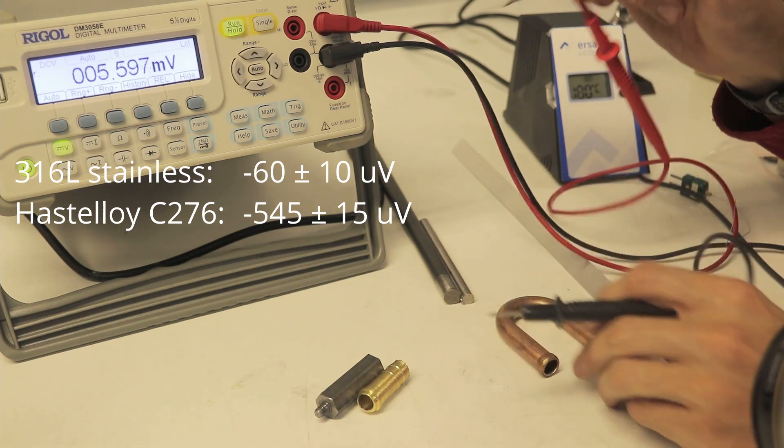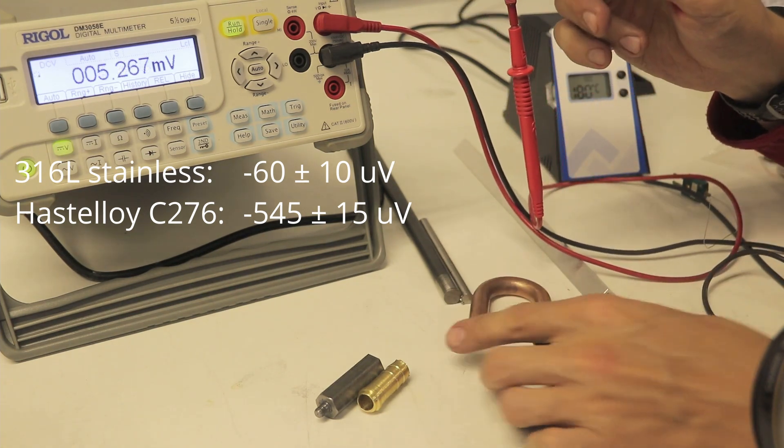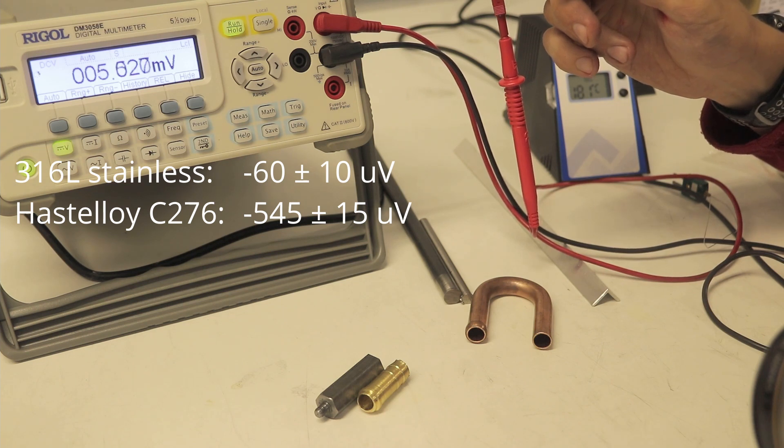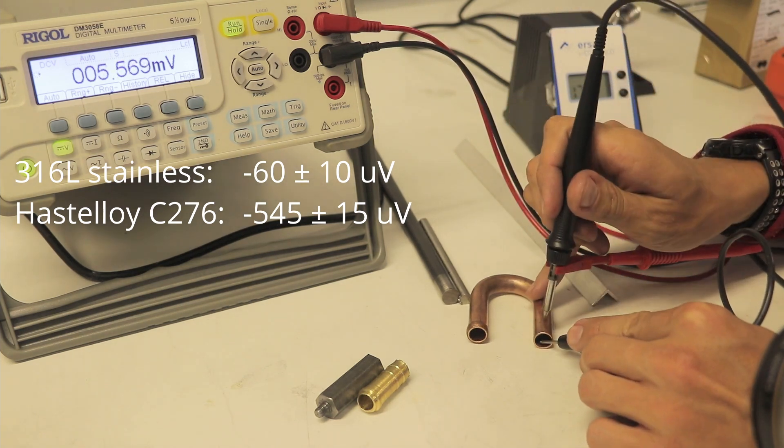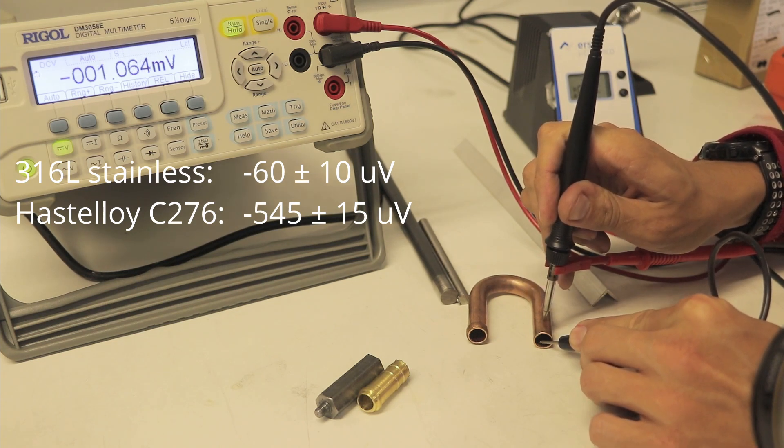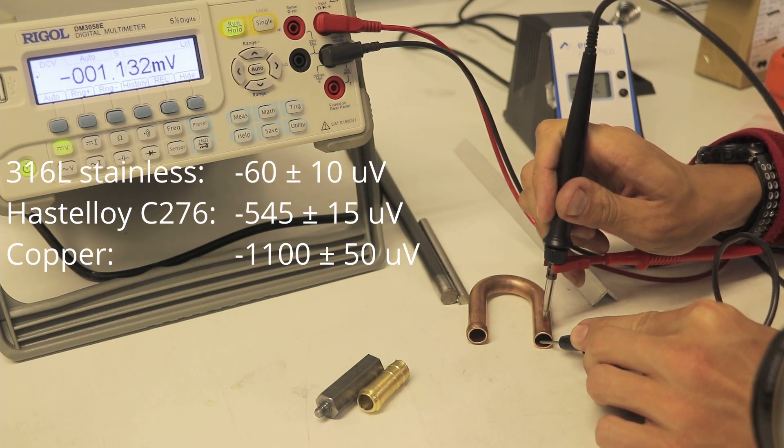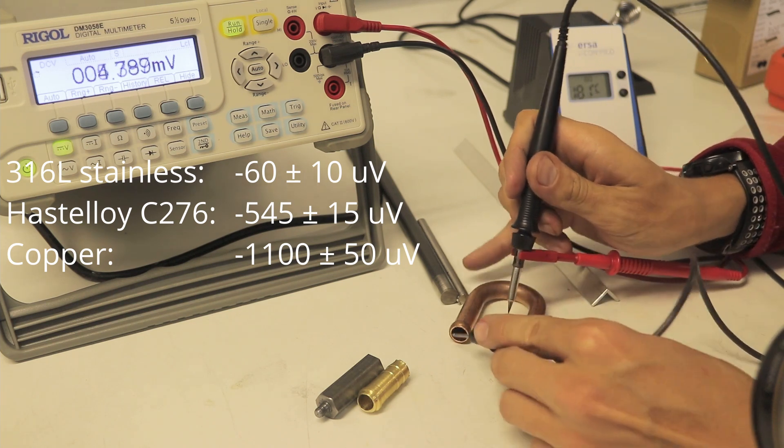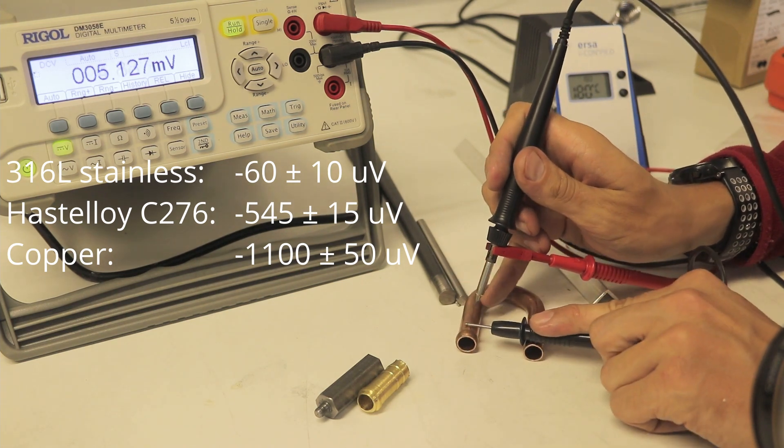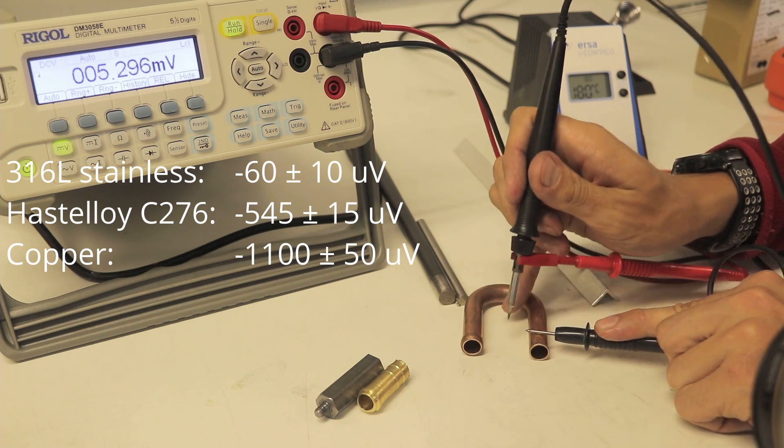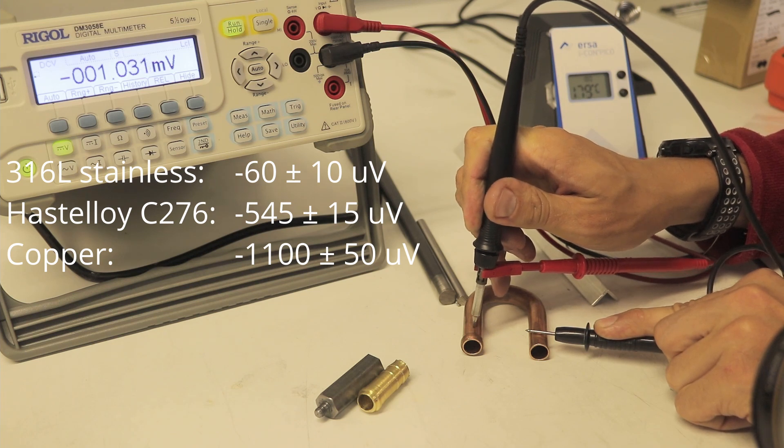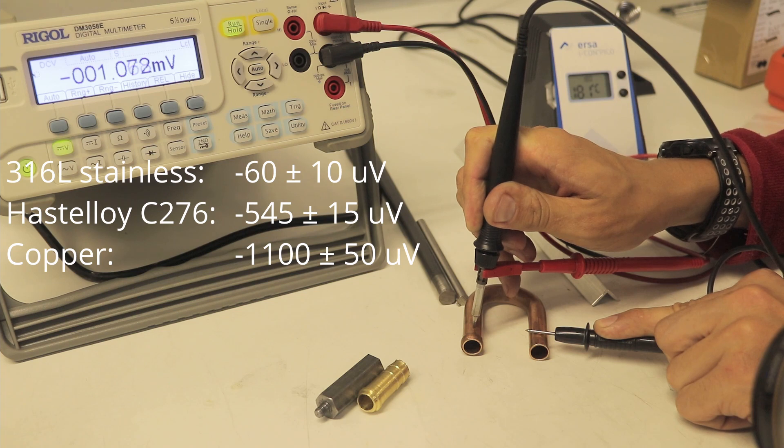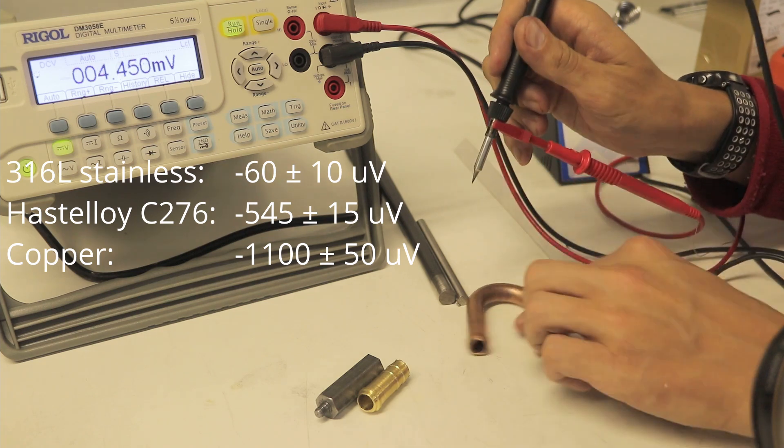Let's have a look at other materials. Let's look at copper. We hold copper and press the soldering iron. You can see minus 1000 microvolts. Again, huge difference with the steel.